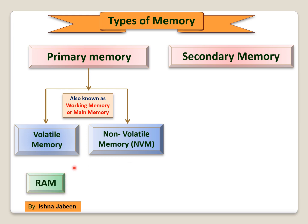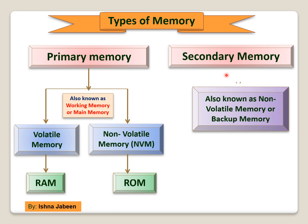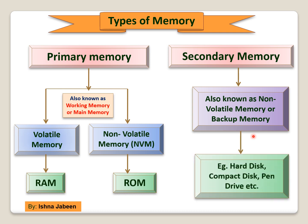RAM, that is random access memory, is a volatile memory. ROM, that is read only memory, is non-volatile memory. Secondary memory stores data for a long time. It is also known as non-volatile memory or backup memory. Some examples are hard disk, compact disk, and pen drive.